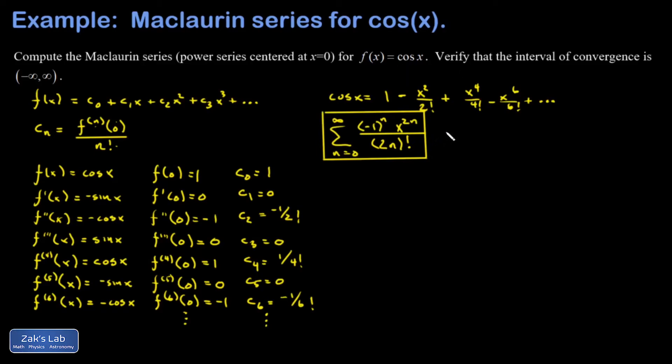Next we're asked to verify that the interval of convergence is negative infinity to infinity, so we're going to use the ratio test for this. We look at the limit as n goes to infinity of the absolute value of the n plus one term over the nth term, and when that's less than one we're going to have a convergent series.